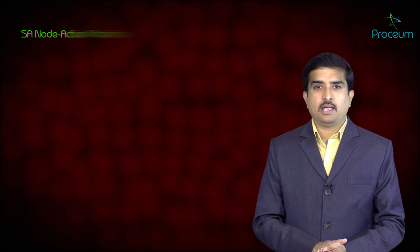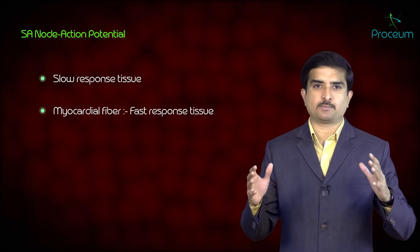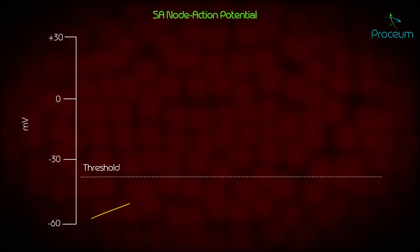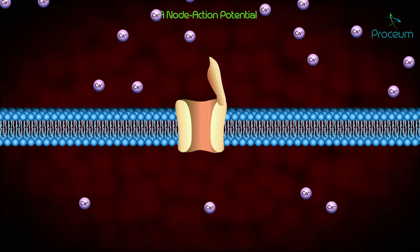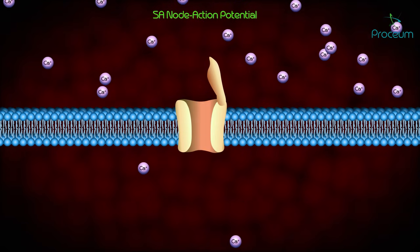The SA node is slow response tissue, unlike the fast response myocardial fiber. In SA nodal action potential, phases 1 and 2 are absent; only phases 0, 3, and 4 are present. Phase 0 in the SA node occurs when the cell reaches threshold at −40 mV, triggering opening of L-type calcium channels, and depolarization is caused by rapid calcium entry — taking the potential from −40 mV to approximately −5 to −10 mV.